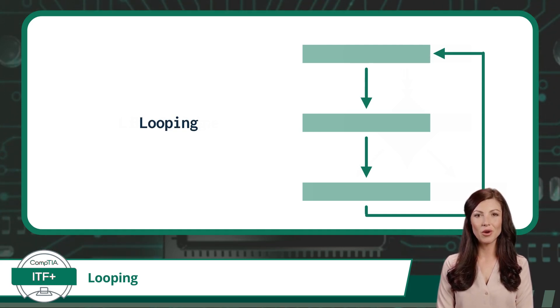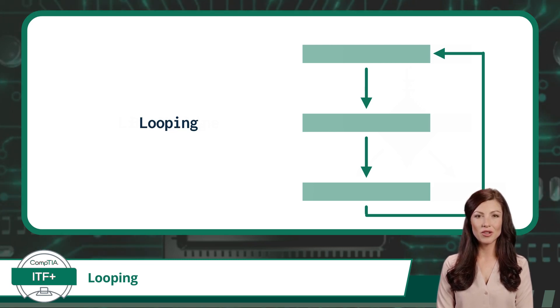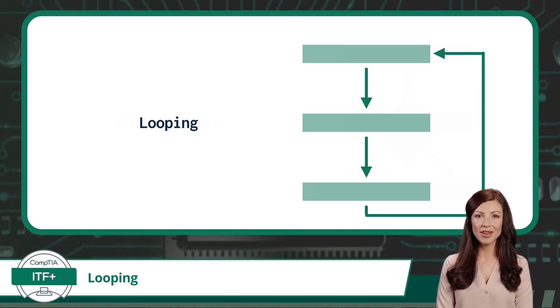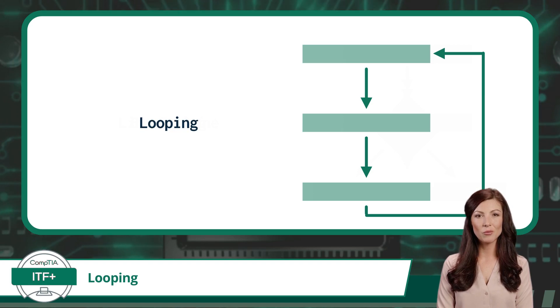Looping. Programming loops are structures in coding that enable the repetition of a specific set of instructions until a certain condition is no longer met. They allow for automating repetitive tasks, making your code more efficient and concise.